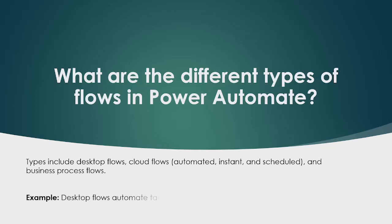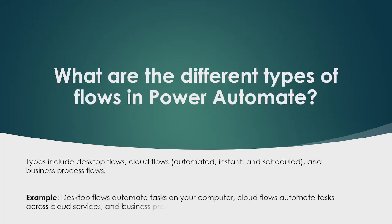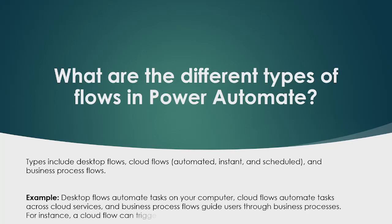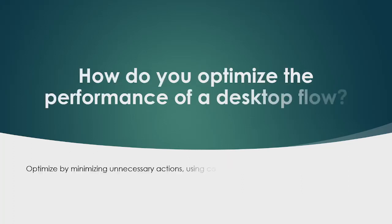The next question is: what are the different types of flows in Power Automate? The different types include desktop flows, cloud flows, and business process flows. Cloud flows also have automated, instant, and scheduled subtypes. For example, desktop flows automate tasks on your computer, cloud flows automate tasks across cloud services, and business process flows guide users through business processes. A cloud flow can trigger a desktop flow to run a report.